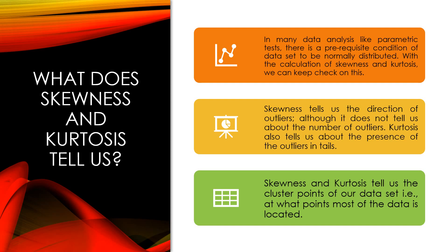Now the most important thing: what does skewness and kurtosis tell us and why do we need to calculate them? In many data analyses, like parametric tests, there is a prerequisite condition for the data set to be normally distributed. By calculating skewness and kurtosis, we can check this. Skewness tells us the direction of outliers — whether they are in the positive or negative direction — though it does not tell us the number of outliers. Kurtosis tells us about the presence of outliers in the tails, whether heavy-tailed or light-tailed. Both also tell us the cluster point of the data set.